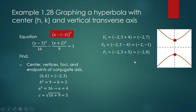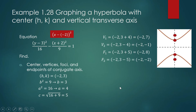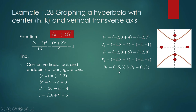The foci lie along your principal axis, so the x-coordinates of your foci stay the same at negative 2. It's the y-coordinate that changes, and we use C. C goes with the focus or the foci. We add 5 and subtract 5 from 3, the y-coordinate of your center — those are the two foci. For the endpoints of the conjugate axis, we add B: negative 2 plus 3 equals 1, and negative 2 minus 3 equals negative 5.